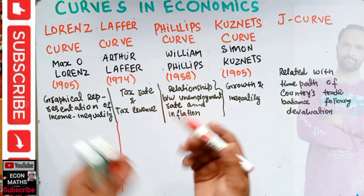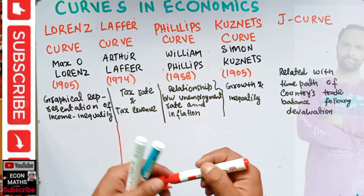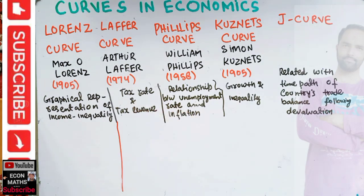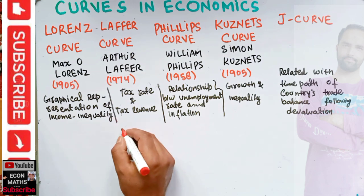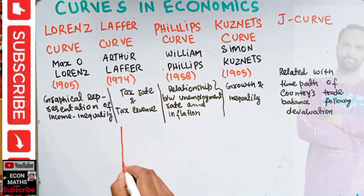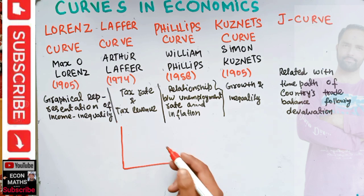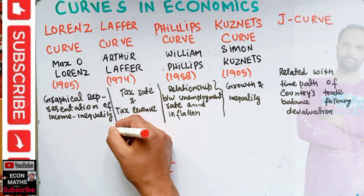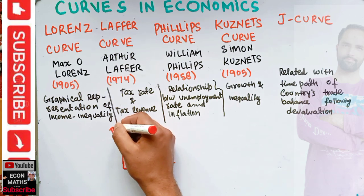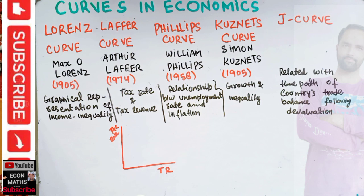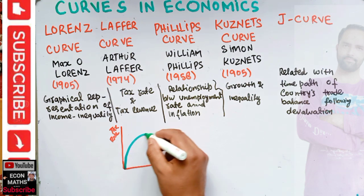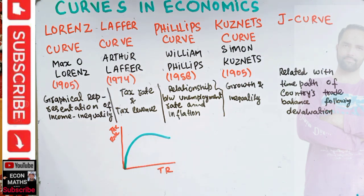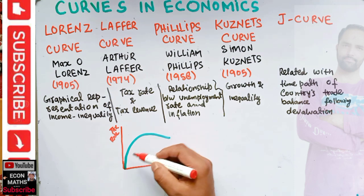The Laffer curve was introduced in 1974. It shows the relationship between tax rate and tax revenue. Let me draw the graph — on this axis we have the tax revenue, and on this axis we have the tax rate. The graph looks quite simple.